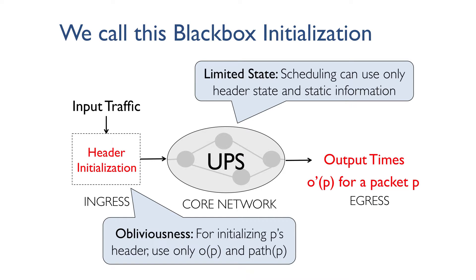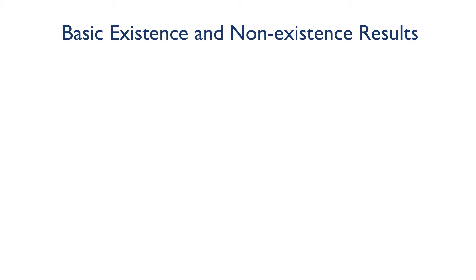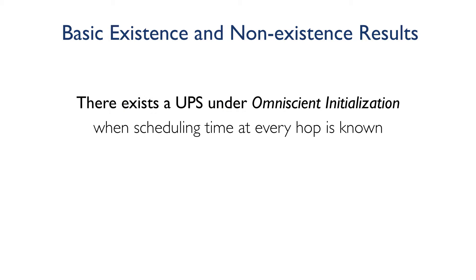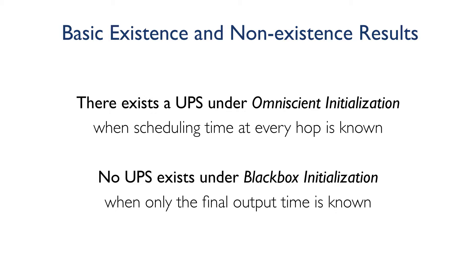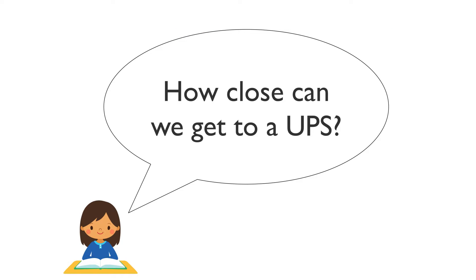With this model, let us look at some of our basic results. We can show that we can always have a UPS under the omniscient initialization condition, where the header initialization process can use extensive knowledge about when every packet was scheduled at every hop. But this is not a very surprising result. Interestingly, we can also produce a counter-example showing that we can never have a perfect replay under the black box initialization condition — where only the final output times at the egress are used to initialize packet headers.